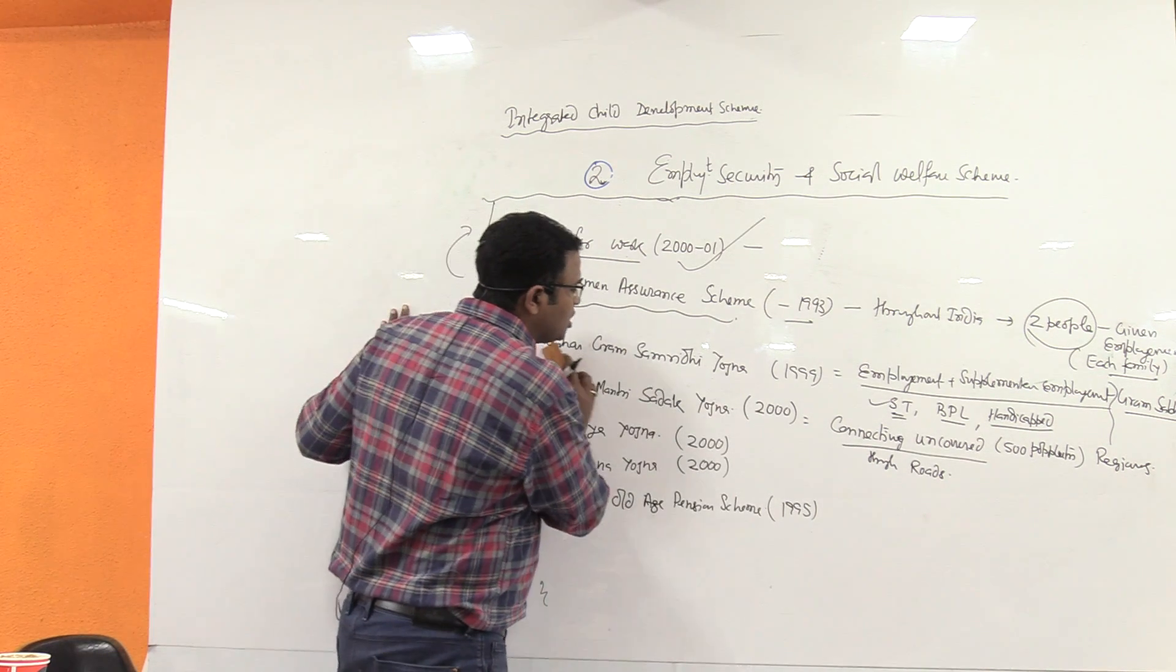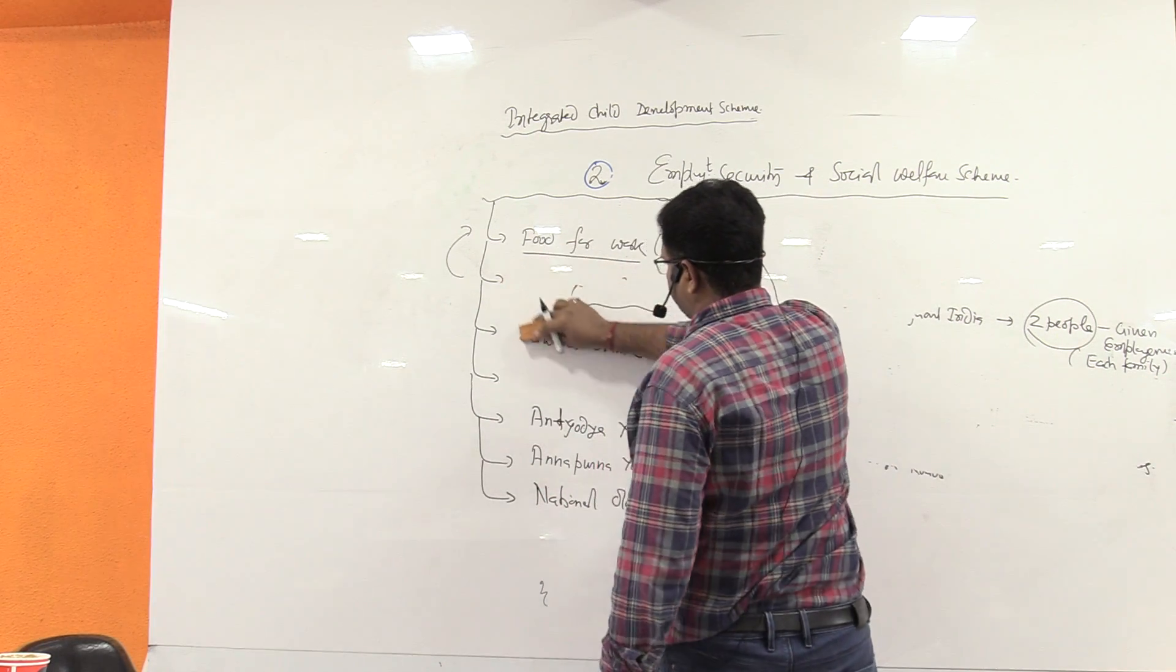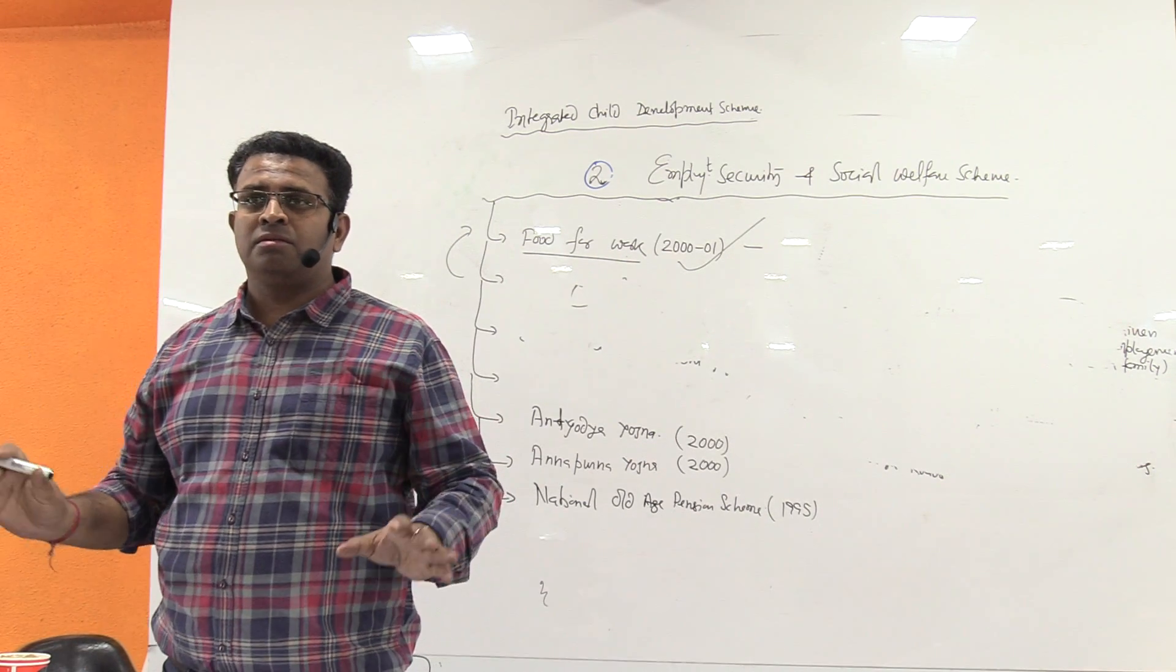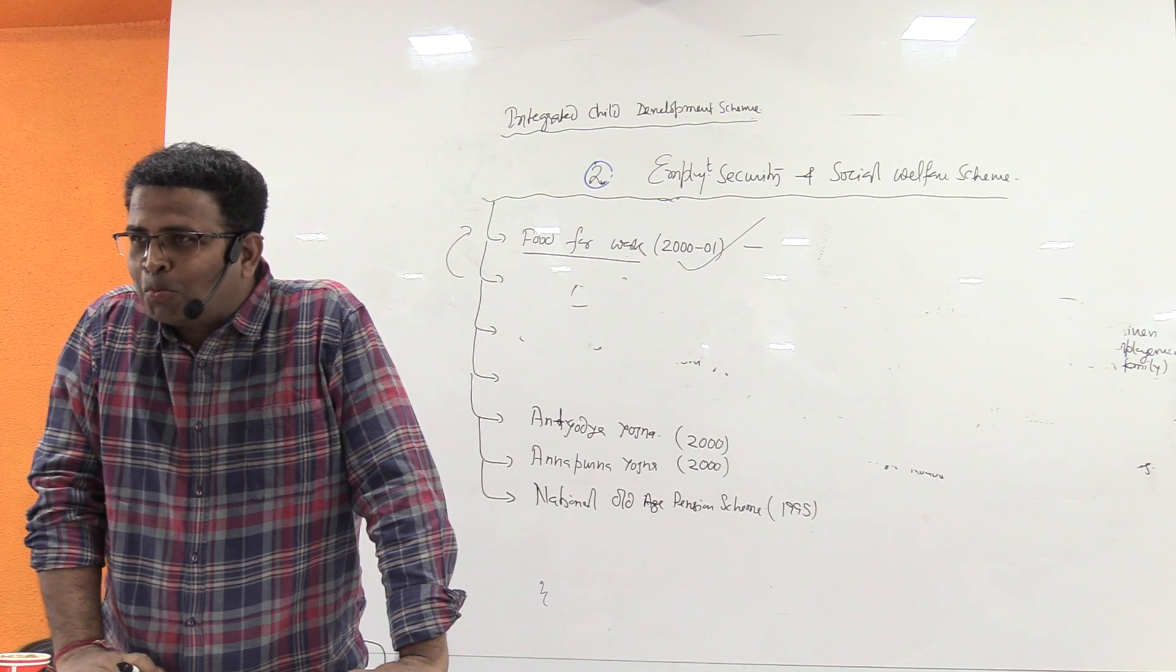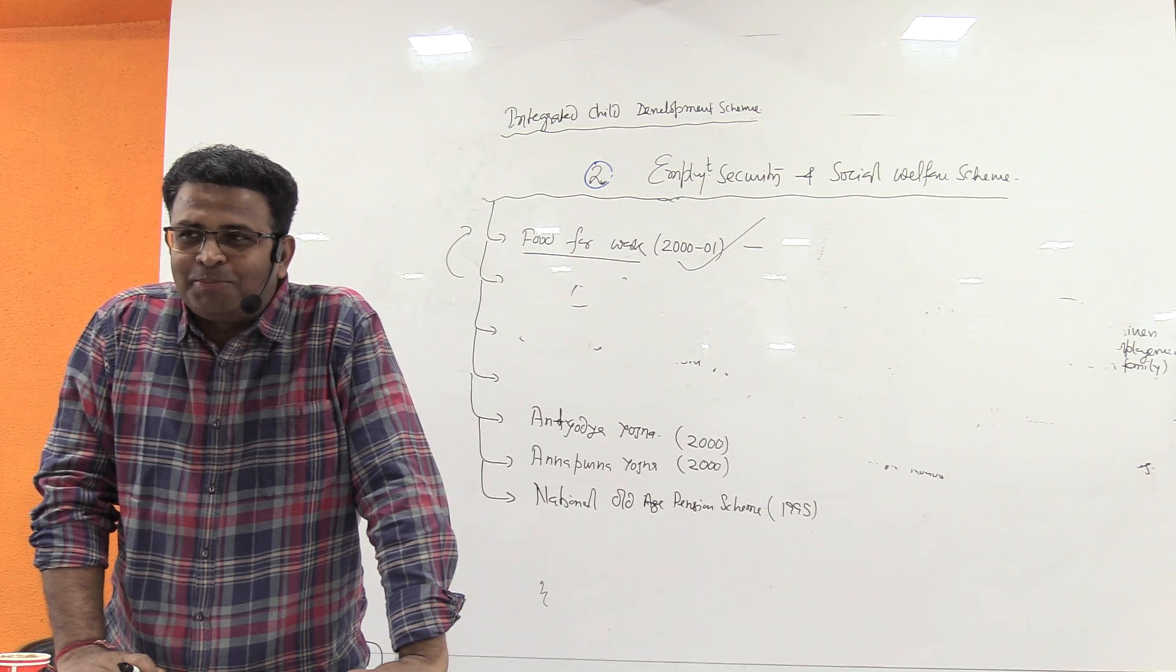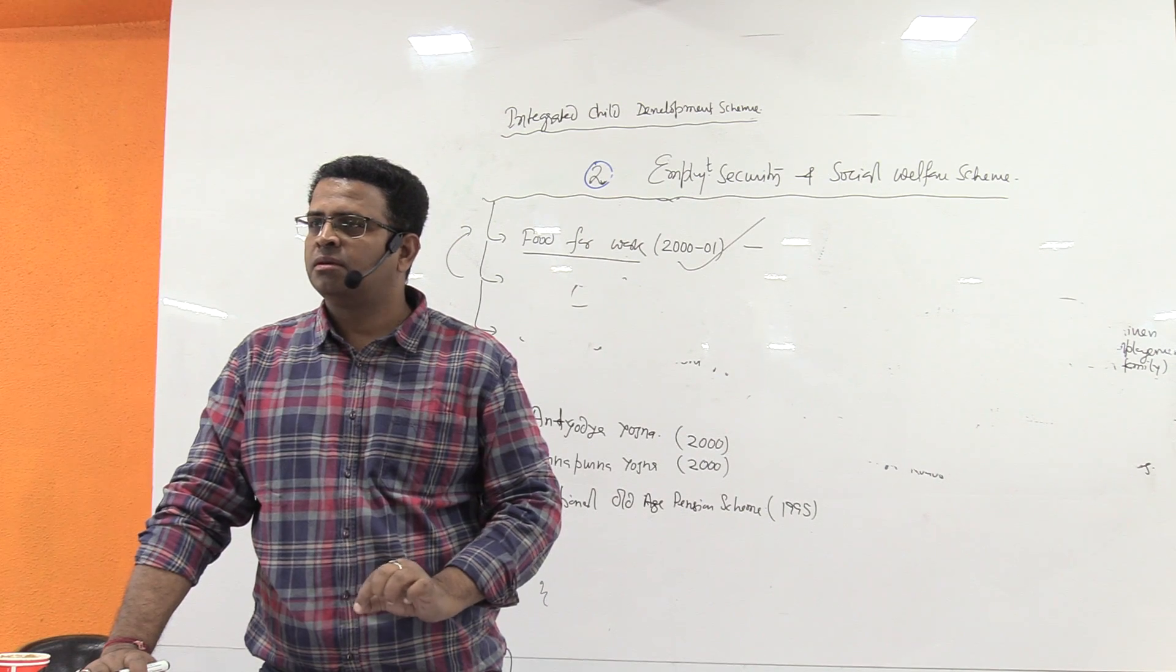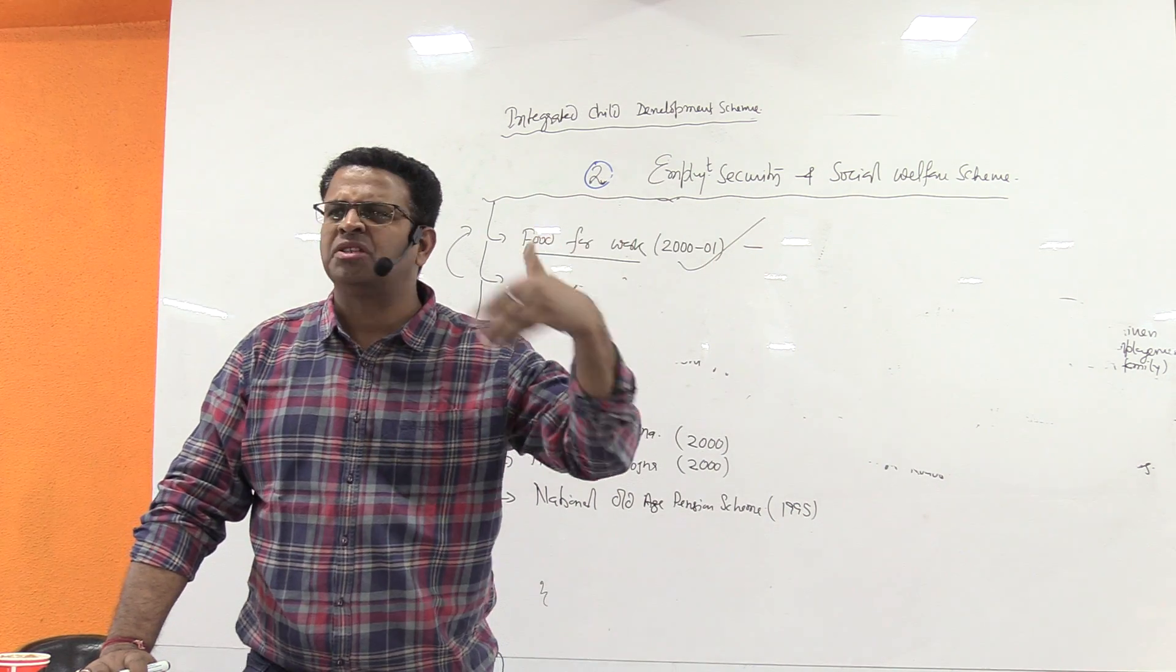So the next one - what is the meaning of Antyodaya? Poorest of the BPL. BPL may be poor, but this is the most poor. Antyodaya will reach them at the cost of two rupees for wheat and three rupees for rice. It is considered to be free.